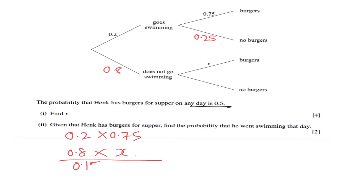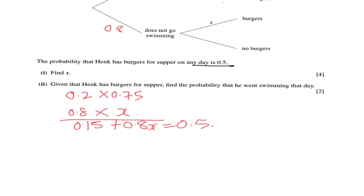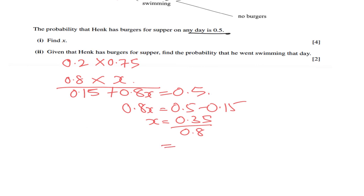So 0.15 plus 0.8X equals 0.5. From there we can work out what is X. 0.8X equals 0.5 minus 0.15, so X equals 0.35 divided by 0.8, and the answer is 0.4375.